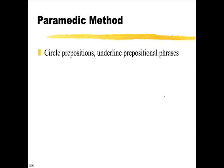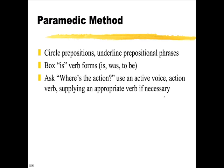Lanham suggests you should circle prepositions and underline prepositional phrases. It's really just to get you in there working with the sentences. You also box forms of the verb 'to be' — is, was, etc. And this is the key part: ask yourself, where's the action? Who does what to whom? He says use an active voice, but more important than active voice is having an action verb.